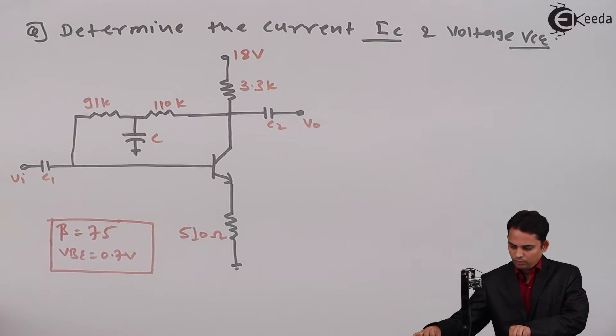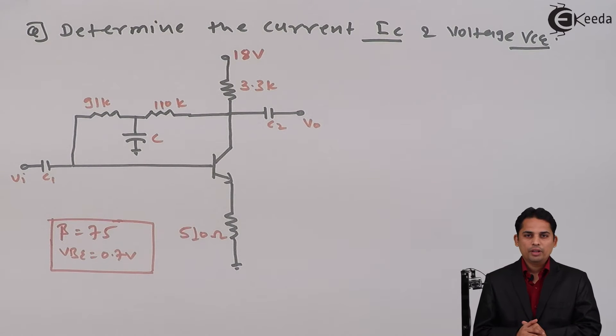Now students, we are going to solve one problem based upon collector-to-base bias. Let's see that problem. In the question they have asked you to determine current IC and voltage VCE for the given circuit. Let's see the circuit first.